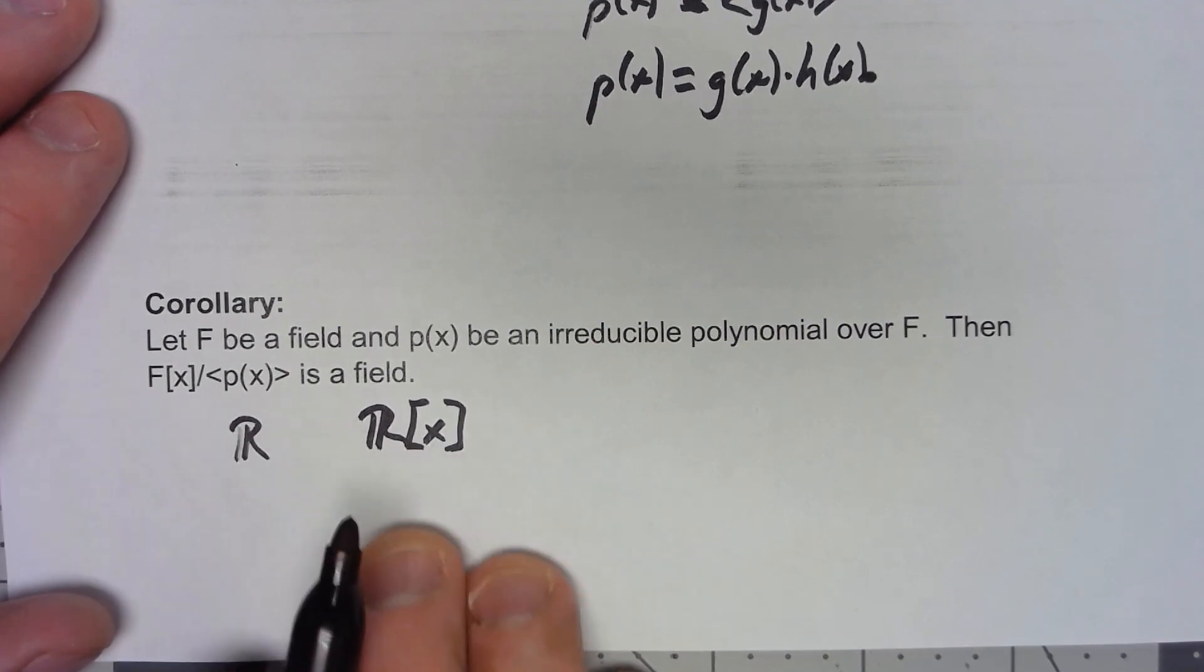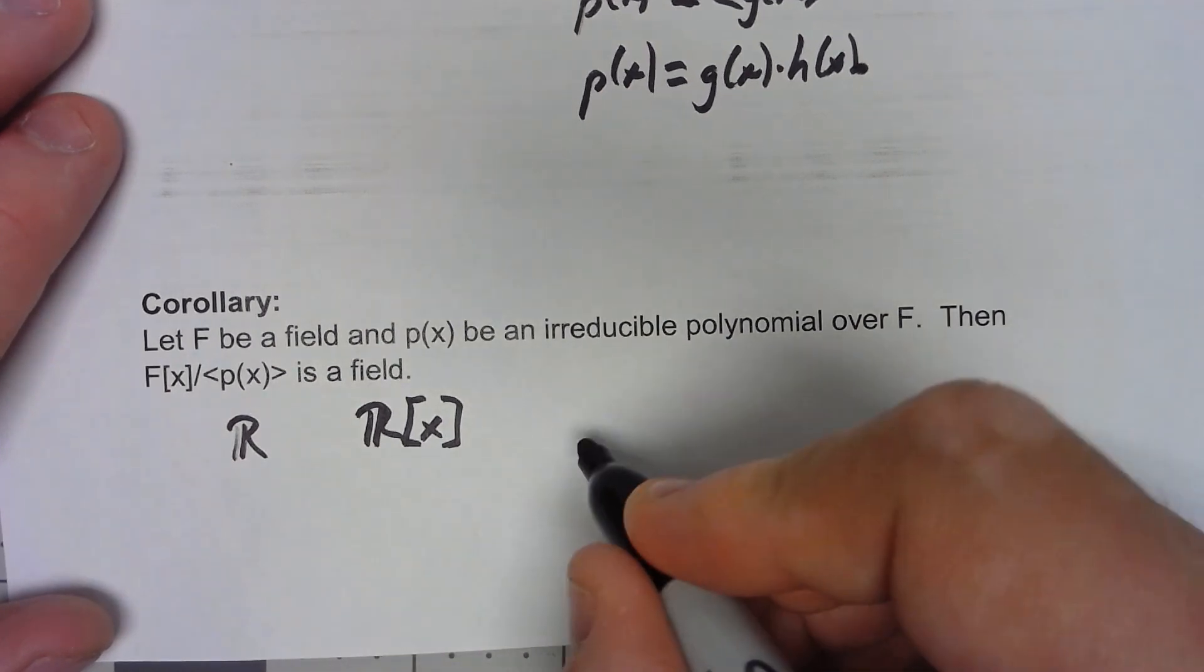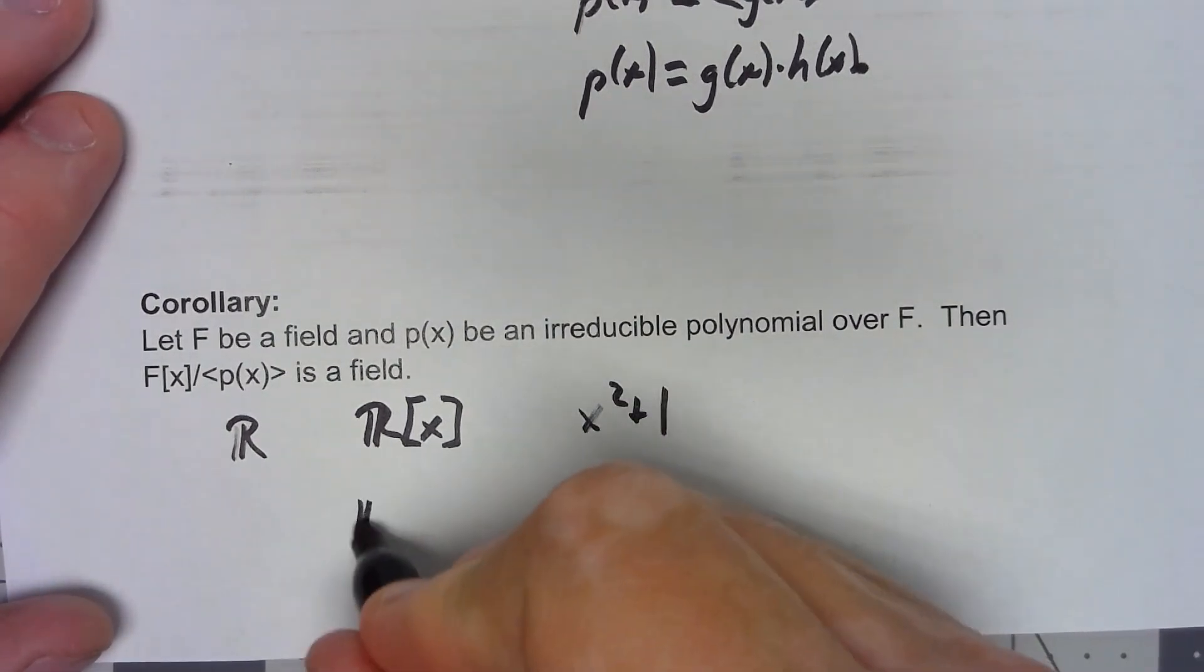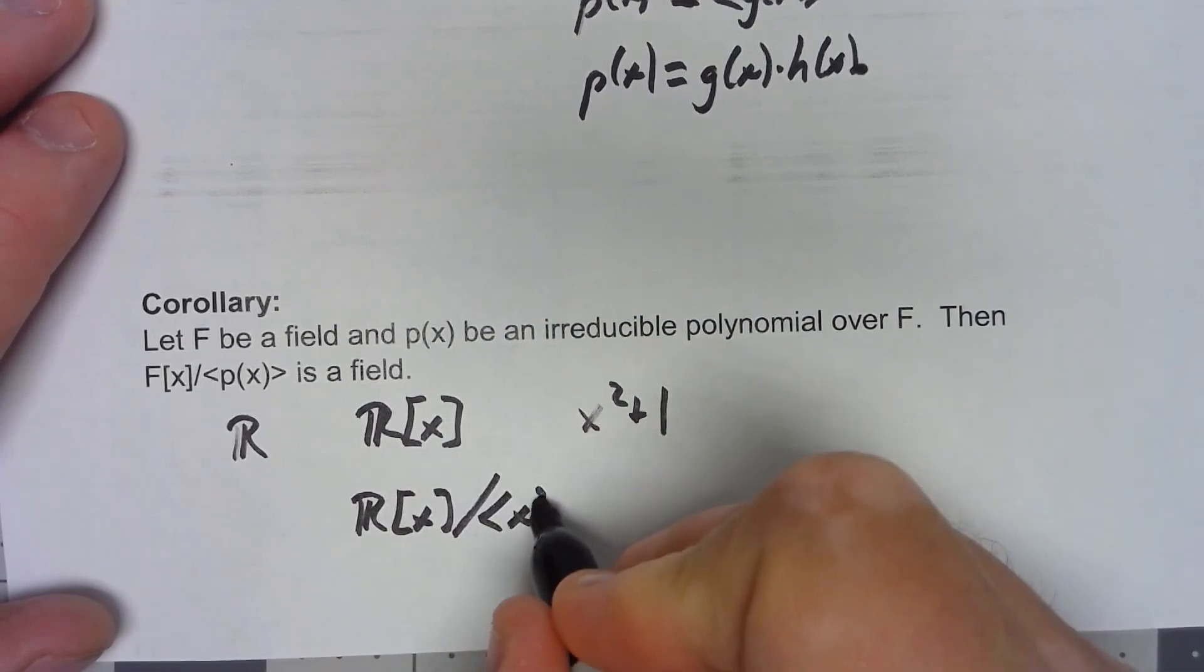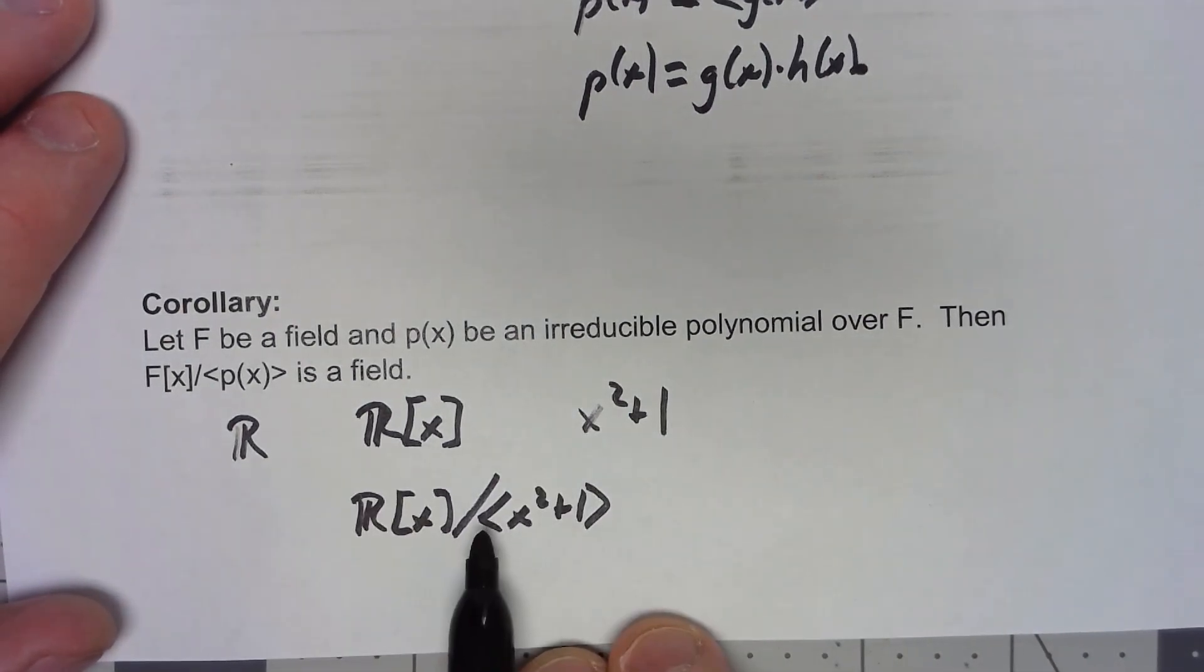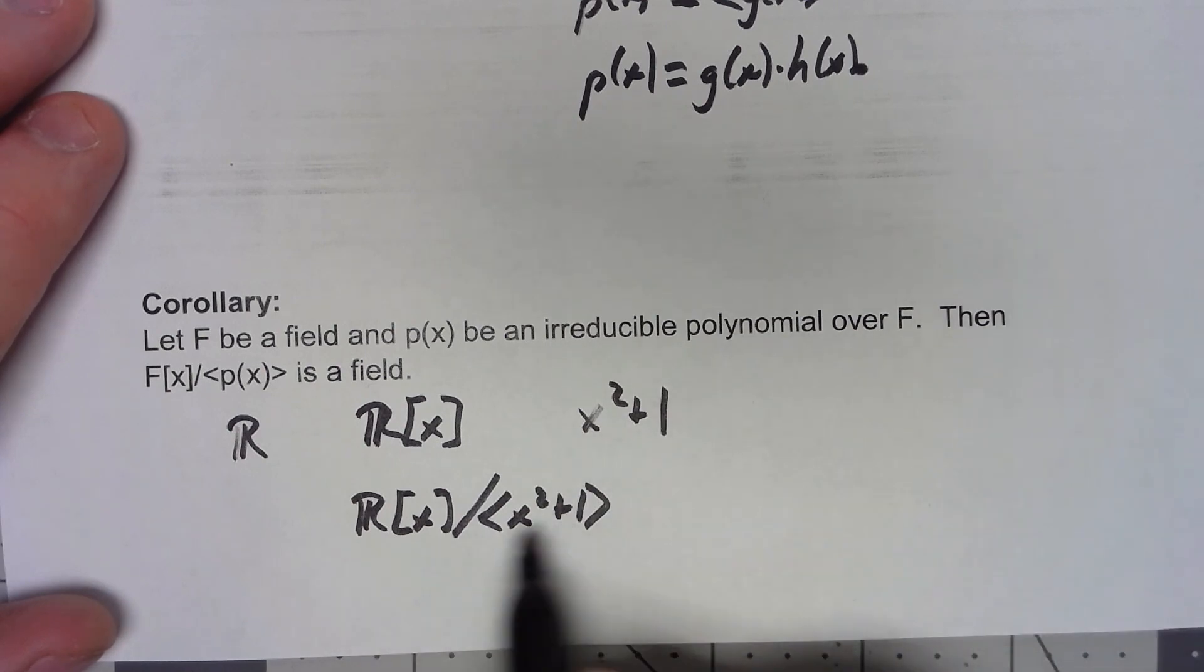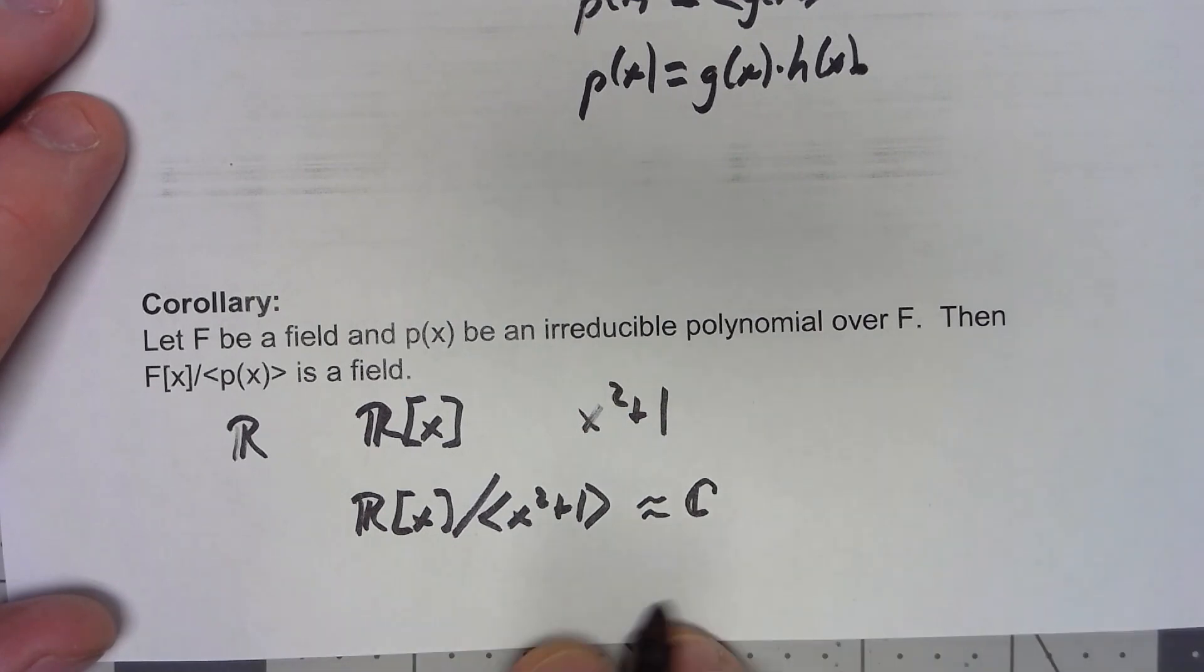However, if I take an irreducible polynomial in there, say, for example, x squared plus one, and I create my factor ring, that does become a field. In fact, we've kind of looked at this before. This field is isomorphic to the complex numbers, but depending on what irreducible polynomial we used, we can get all kinds of interesting things happening here.